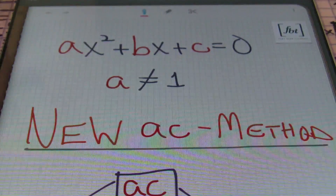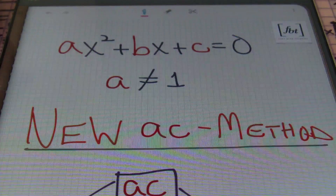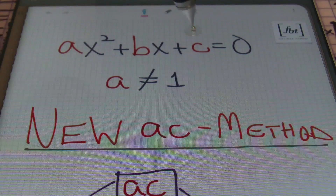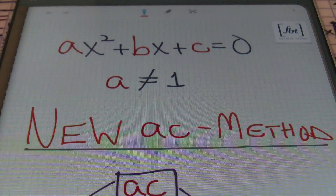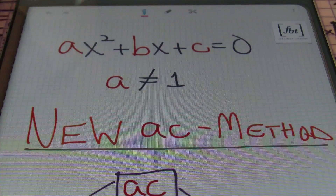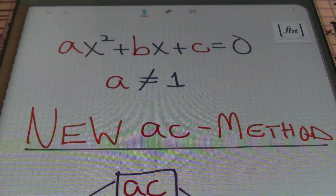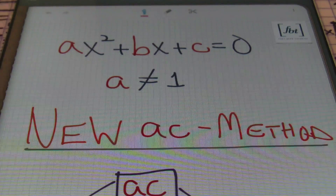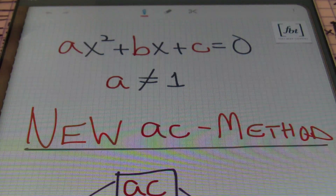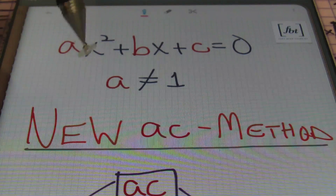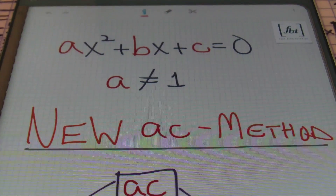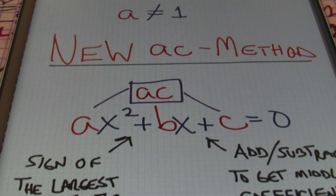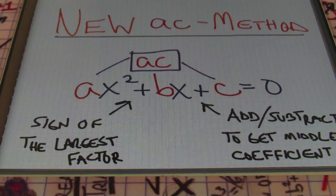So once again, let's say that you have the format of an equation — or expression, for that matter, meaning without the equals-zero part — AX squared plus BX plus C, where A does not equal one. We're going to use something I call the new AC method. You may not see this method a lot of places, but this is the one I use.